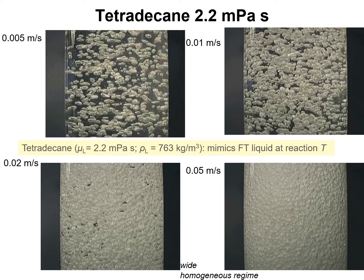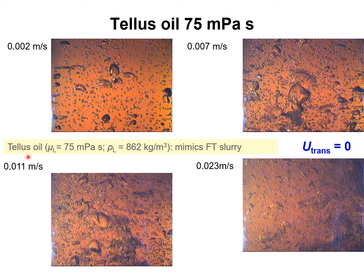Tetradecane mimics the FT liquid at reaction temperature, but the liquid in the reactor also has catalyst suspended in it. Adding catalyst to the liquid increases the effective viscosity. So let's examine the influence of increased liquid viscosity on bubble hydrodynamics using tallus oil, which has a viscosity of 75 millipascal seconds and a density of 862 kilograms per cubic meter. Tallus oil mimics the FT slurry phase — the liquid plus suspended catalyst.